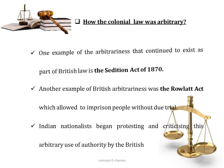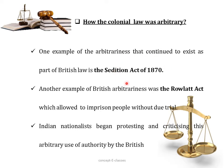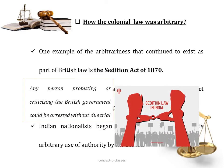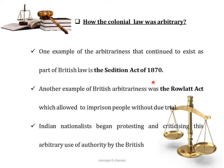One example of this arbitrariness in British law is the Sedition Act of 1870. According to this act, any person protesting or criticizing the British government would be arrested without any trial. According to the British government, many rebellions and resistance took place, and according to this act, they did not need any evidence to arrest the person. They could arrest and detain any person they want without any trial. The Indian nationals found this act very arbitrary. Another example of British arbitrariness was the Rowlatt Act, which also allowed them to imprison any people without any trial.